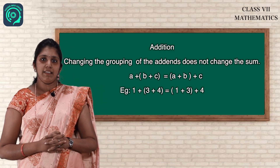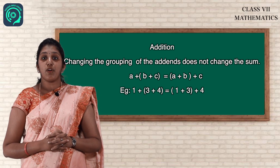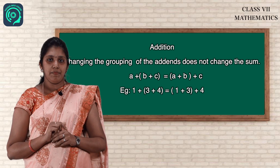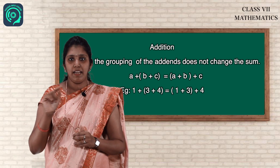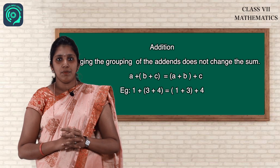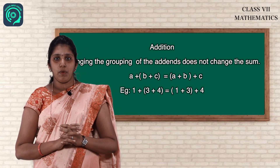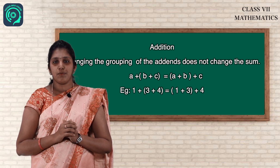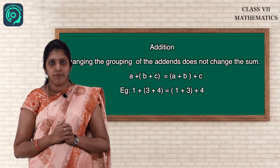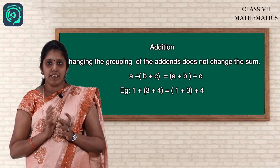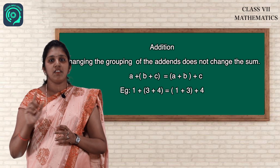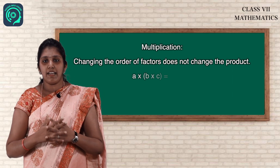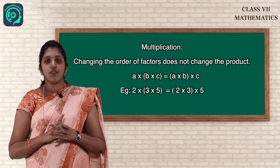Next property is associative property. Changing the grouping of addends does not change the sum. The general form is: (A plus B) plus C equals A plus (B plus C). For example, (1 plus 3) plus 4 equals 1 plus (3 plus 4). When you check the left-hand side and right-hand side you get the same answer — only the grouping changes. So associative property holds good for addition.